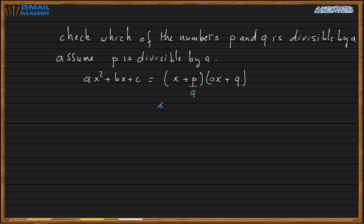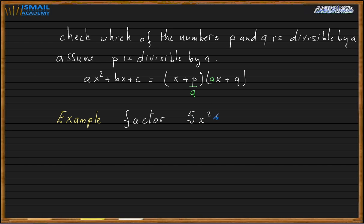The main concept is to use direct factoring, then check which number is divisible by A and apply that step. Let's do an example to see how it works. Let's factor the expression 5x squared plus 2x minus 3.